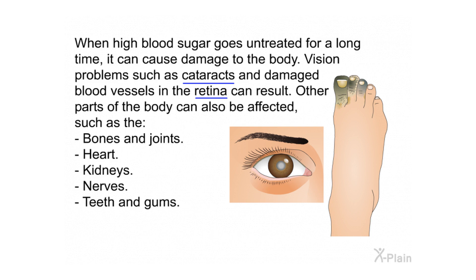When high blood sugar goes untreated for a long time, it can cause damage to the body. Vision problems such as cataracts and damaged blood vessels in the retina can result. Other parts of the body can also be affected, such as the bones and joints, heart, kidneys, nerves, teeth, and gums.